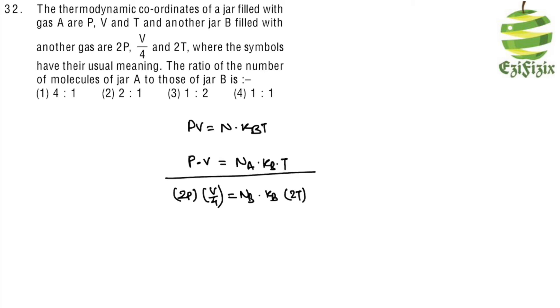When we divide them, P, V, kB, and T cancel out. We have NA divided by 2NB equals 2/4. Simplifying, we get NA divided by NB equals 4/1, so the ratio is 4 to 1.